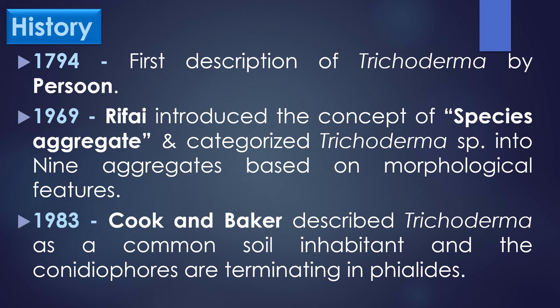History of Trichoderma species: The first description of the genus Trichoderma was in 1794 by the scientist Persoon. In 1969, Riffay introduced the concepts of specific aggregate and categorized Trichoderma strains into 9 aggregates based on morphological features. Unfortunately, some species consist of two or more morphologies that were non-differentiable.